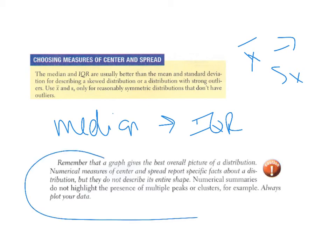Also remember that graphs are your best friend. Numerical summaries give information, but they don't show all the details — they don't show multiple peaks or clusters. So always show your data visually in addition to describing it numerically. And that would be the end of chapter one.